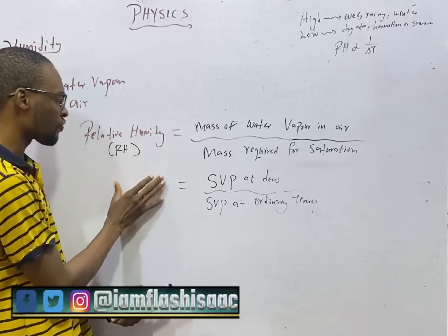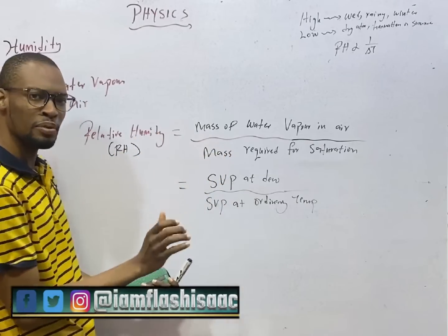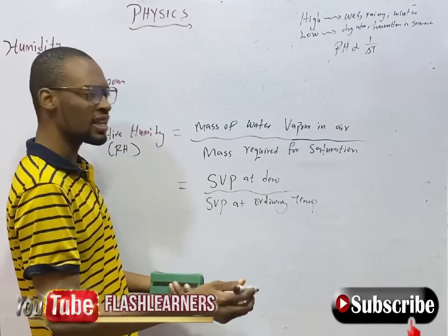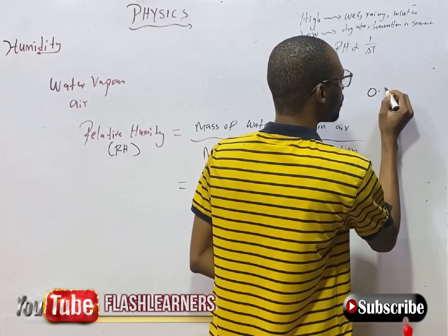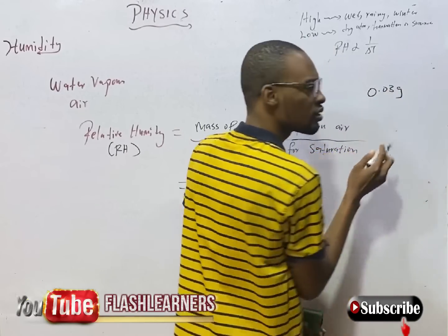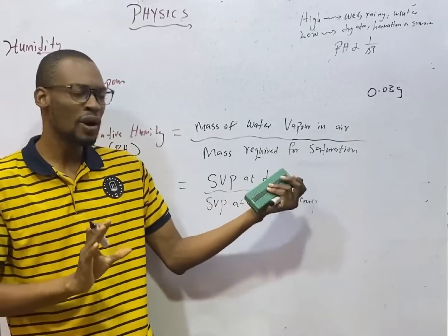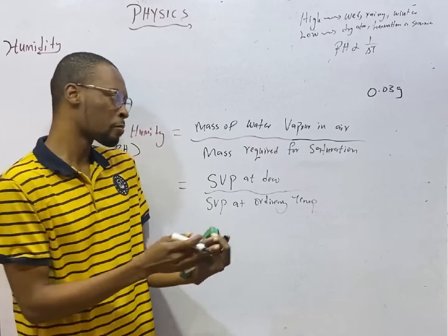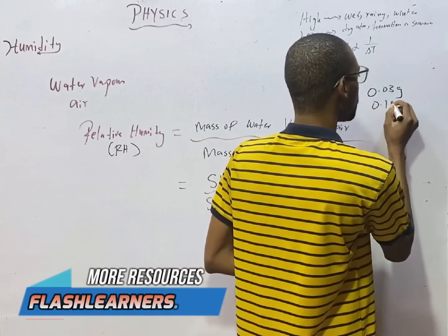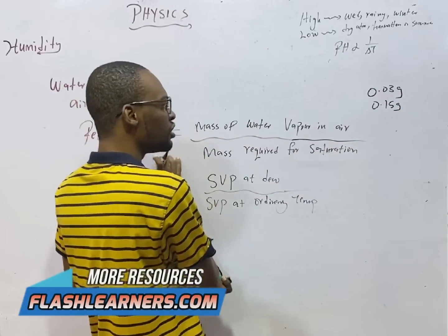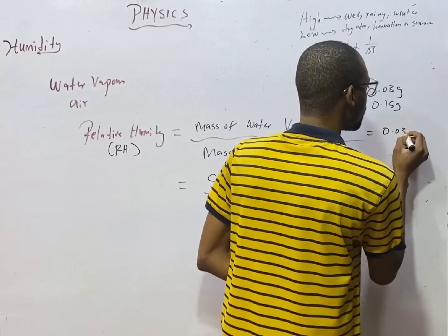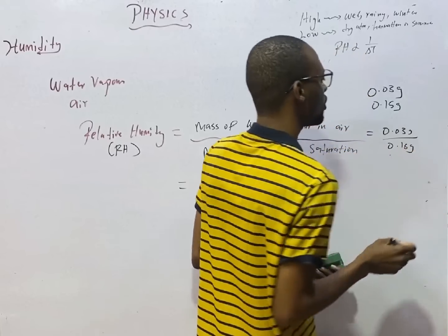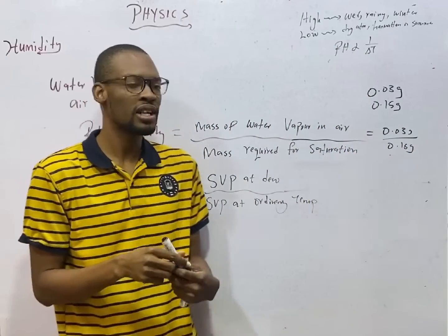Look at this formula. Relative humidity equals mass of water vapor in air over the mass required for saturation. For example, if the mass of water vapor in air is 0.02 grams and the mass required for saturation is 0.15 grams, then relative humidity equals 0.03 grams over 0.15 grams. That is how to calculate or solve questions on relative humidity.